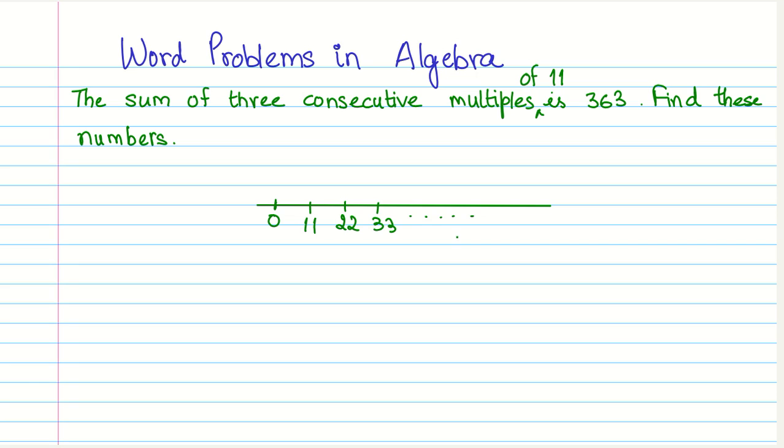What we are told is that the sum of three consecutive multiples, we don't know which multiple it is, of 11 is 363. So we have to make an assumption. Let us say that one of those three multiples is X.